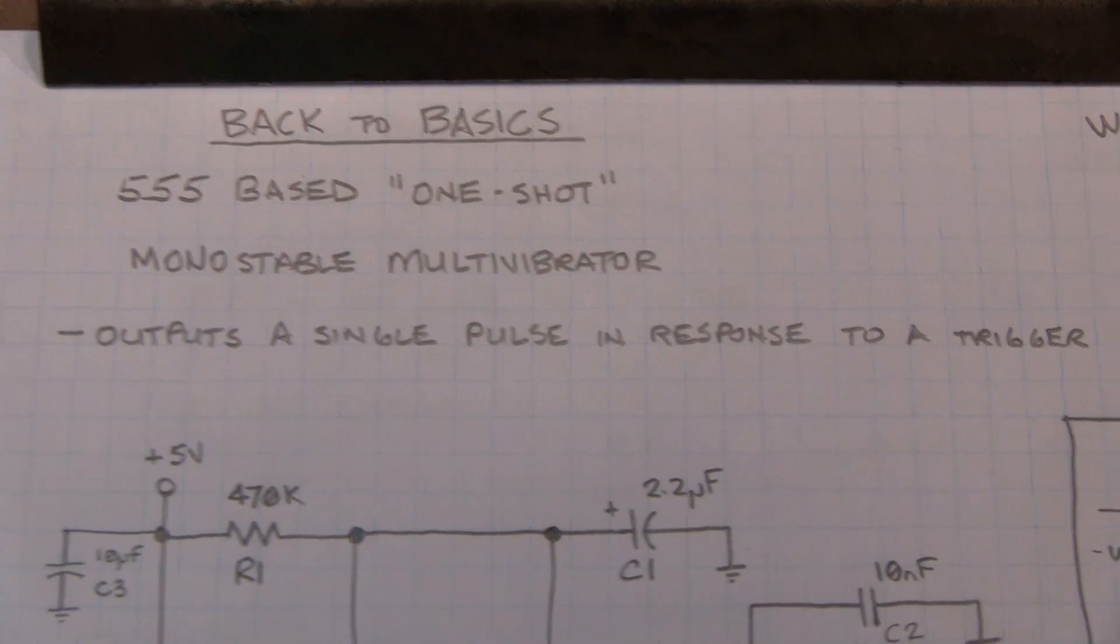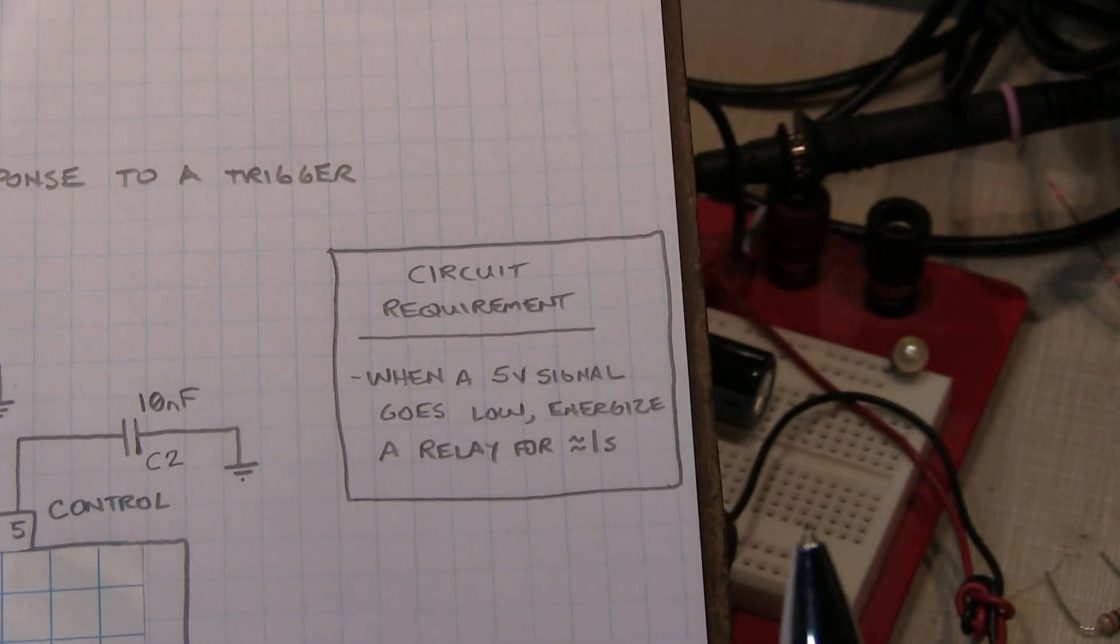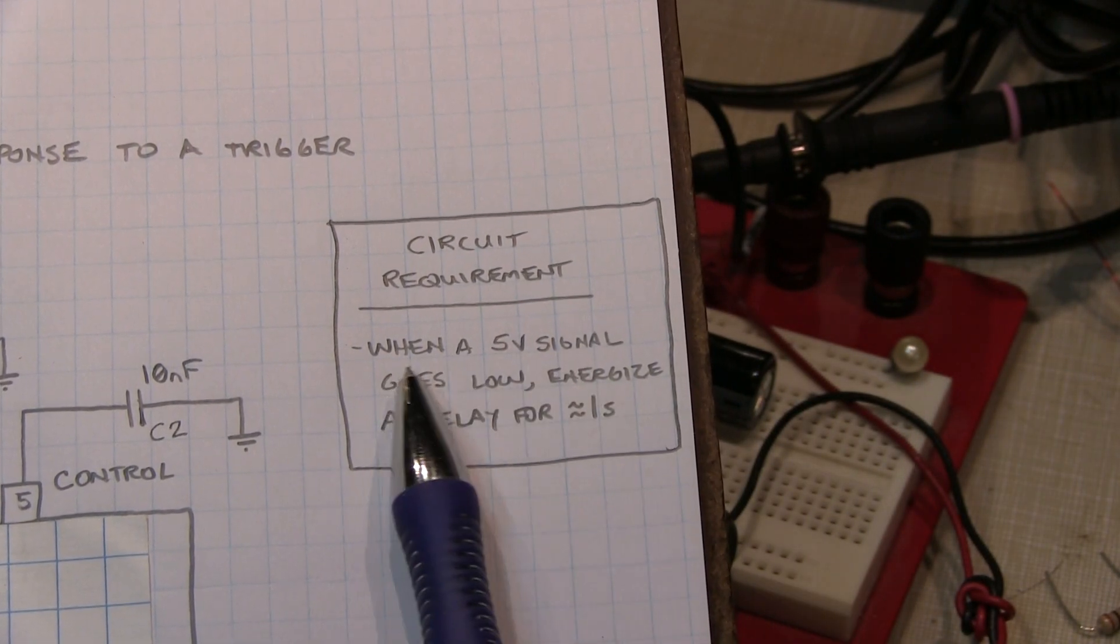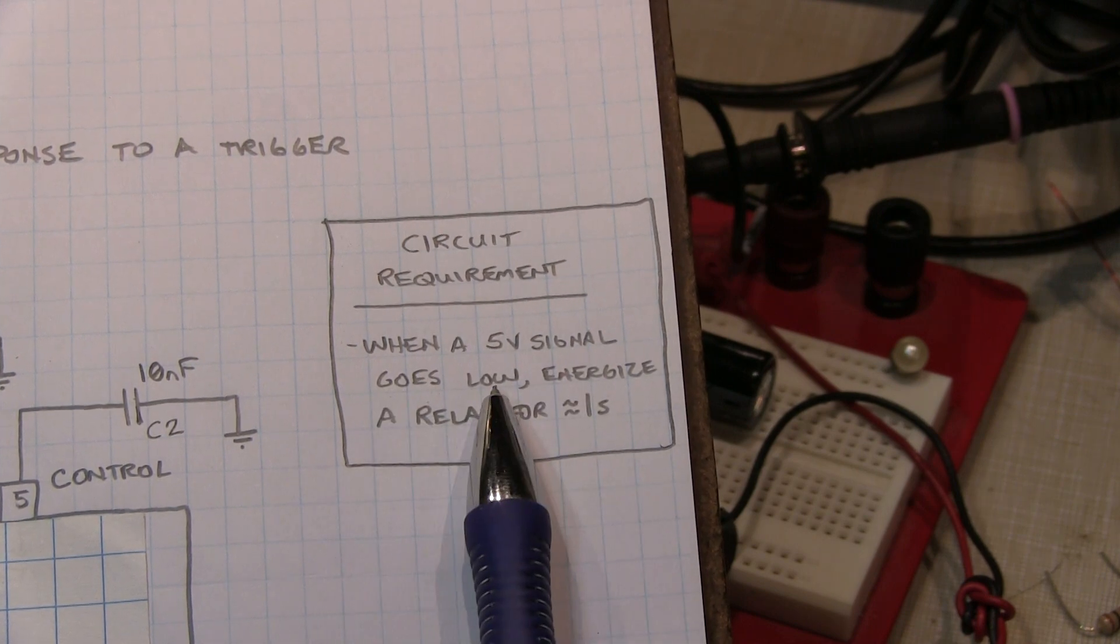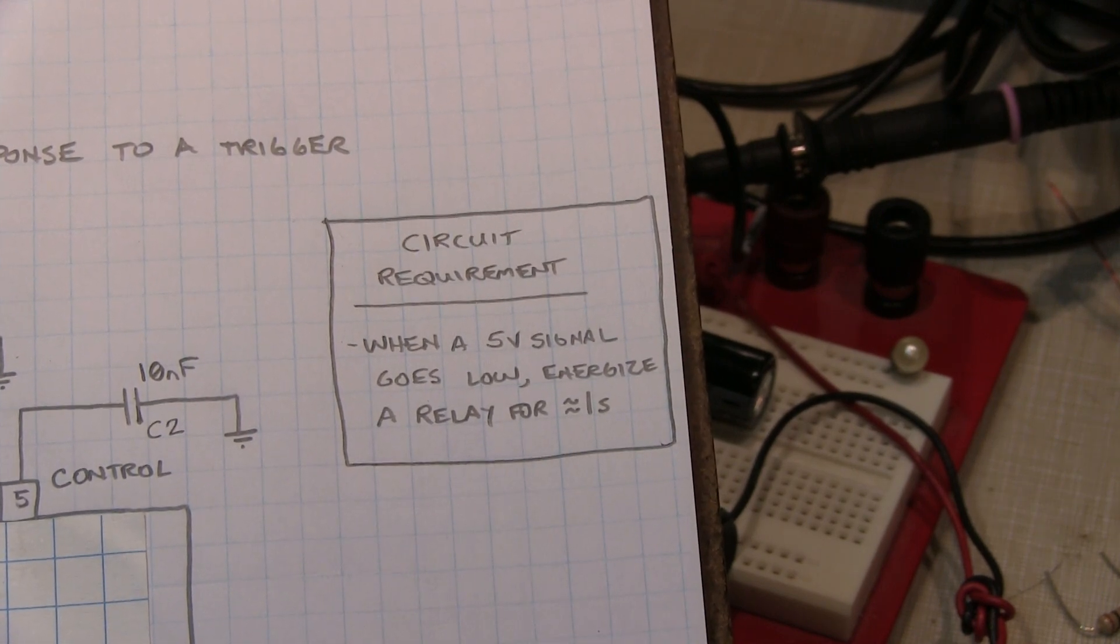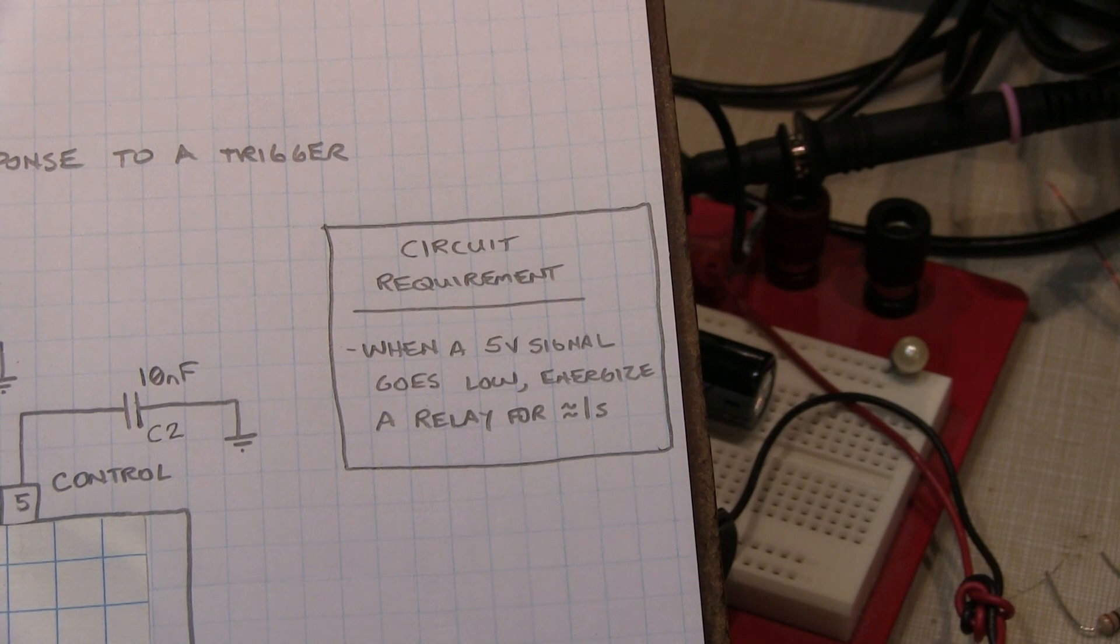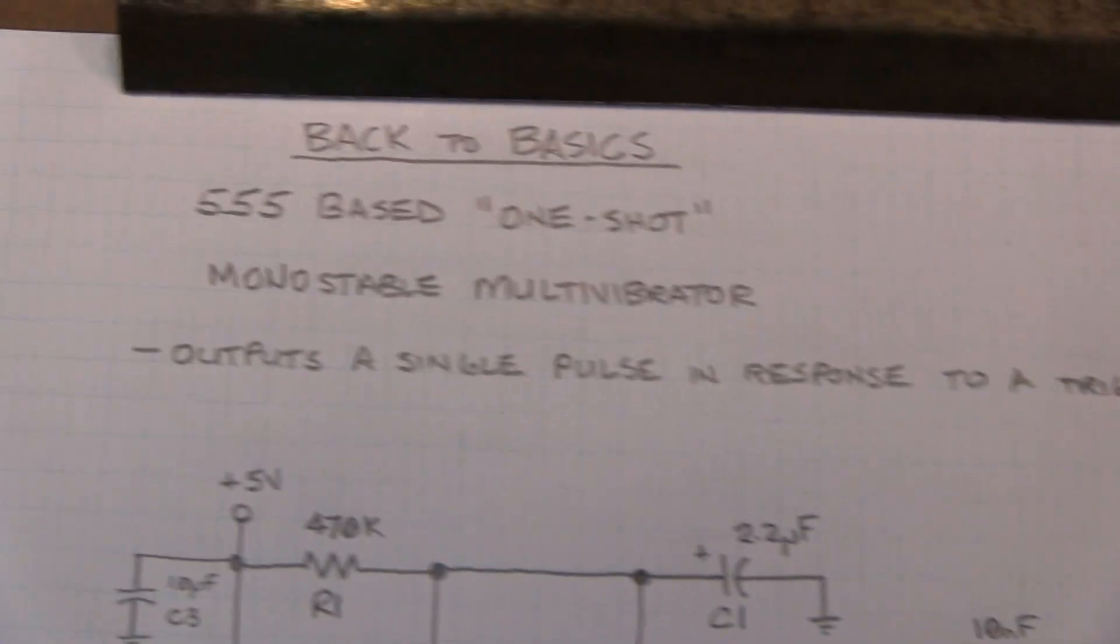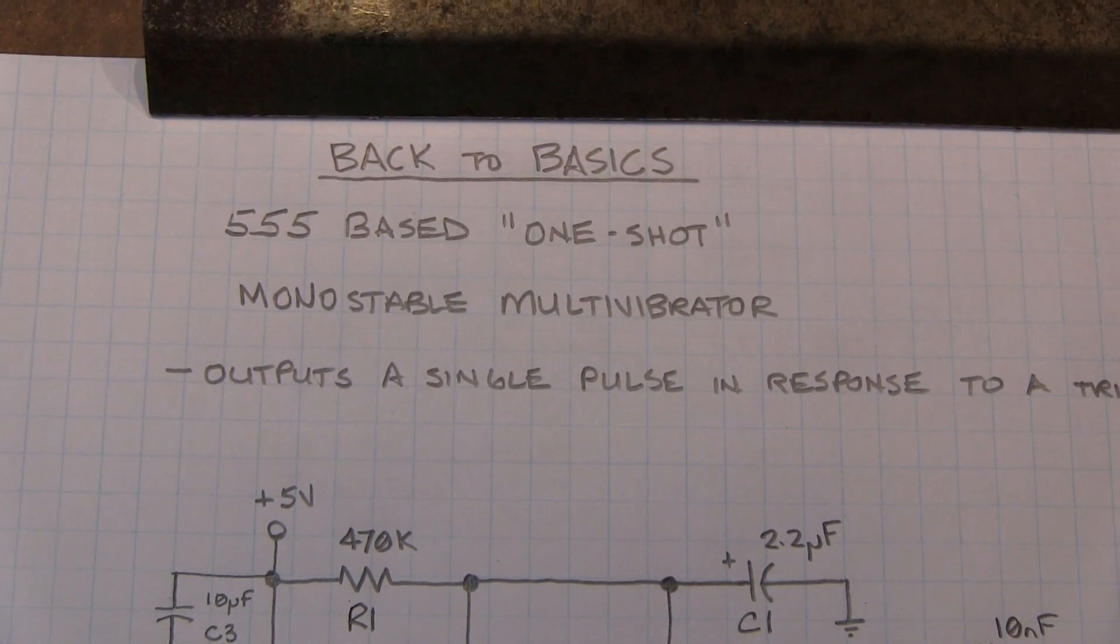Now the reason for doing this, I had a viewer ask me if I had ever designed a circuit that would simply do this function. When a 5-volt signal goes low, energize a relay for one second. He had a particular application for this, so I figured that's actually a pretty simple thing that could be handled by a monostable multivibrator.